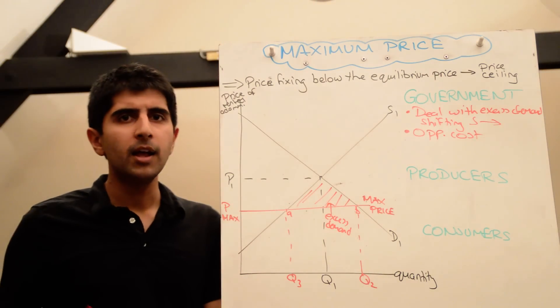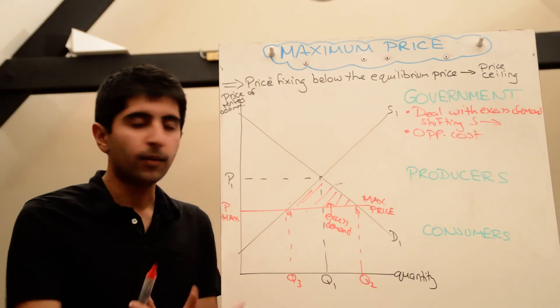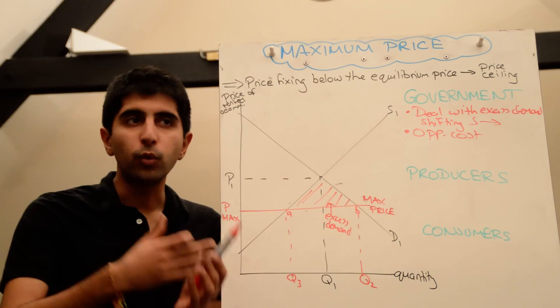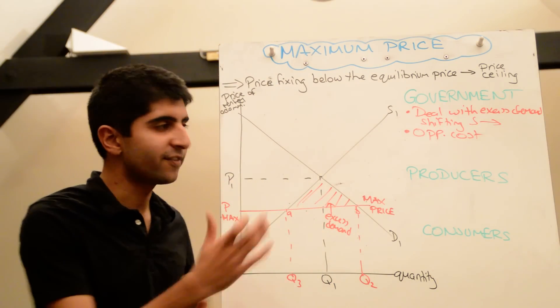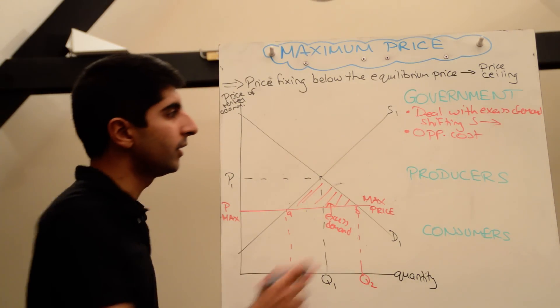At the same time, has that money been taken away from somewhere if subsidies have been placed? And if the government does subsidize, will taxes have to rise in the future to fund the subsidy? There are major opportunity cost issues that the government has to deal with.